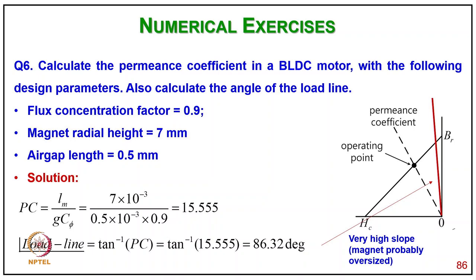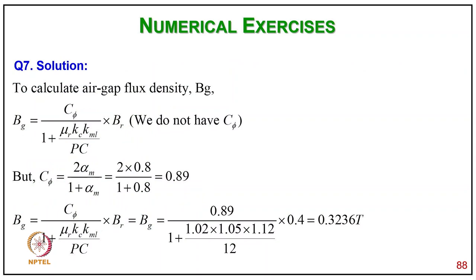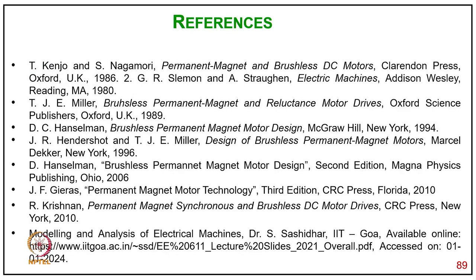Question 5 — A three-phase brushless DC motor has a trapezoidal back EMF peak value of 23.2 V (line to line) at 988 RPM. Calculate Ke (V/kRPM and V·s/rad) and Kt (N·m/A). Solution: Ke = EL-L_pk × 1000/RPM = 23.48 V/kRPM; in V·s/rad: Ke = 0.226 V·s/rad; Kt = 0.226 N·m/A (peak). Question 6 — Calculate the permeance coefficient in a BLDC motor with flux concentration factor = 0.9, magnetic radial height = 7 mm, air gap = 0.5 mm. Pc = lm/gc5 = 15.55; load line angle = arctan(1/Pc) = 86.32°. Question 7 — Calculate the air gap flux density of a PMBLDC motor with Br = 0.4 T, relative permeability μr = 1.02, Carter coefficient Kc = 1.05, leakage factor Kml = 1.12, Pc = 12, and magnet fraction αm = 0.8. BG = c5/(1 + μr·Kc·Kml/Pc) × Br = 0.3236 T.